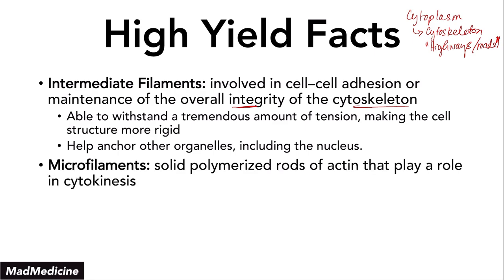Then you have microfilaments. These are solid polymerized rods of actin that play a role in cytokinesis. Think of the cell cycle and mitosis — they play a role in the cleavage furrow that forms when the cell is about to split into two cells.